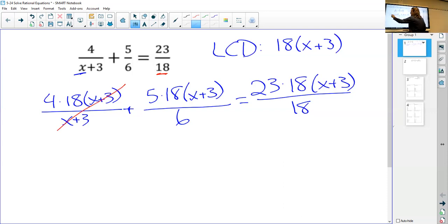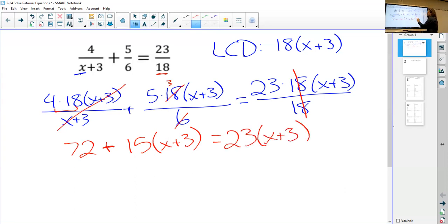Plus 5 times 18(x+3) over 6 equals 23 times 18(x+3) over 18. I know this seems like a lot because it is. That's okay. The whole reason we do this is now we should be able to simplify each of these three fractions so we no longer have fractions anymore. Like we see on our far left fraction, x plus 3 times x plus 3, that's going to cancel. And we're going to be left with 4 times 18 is 72.